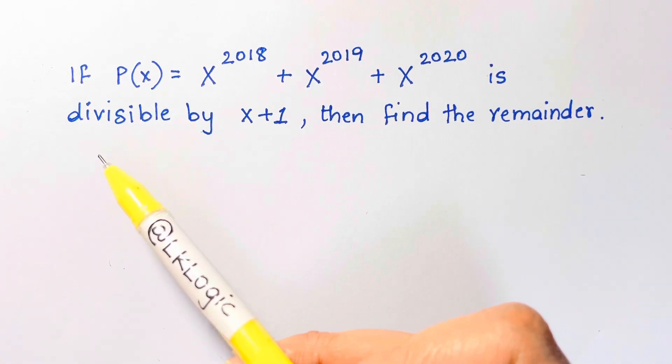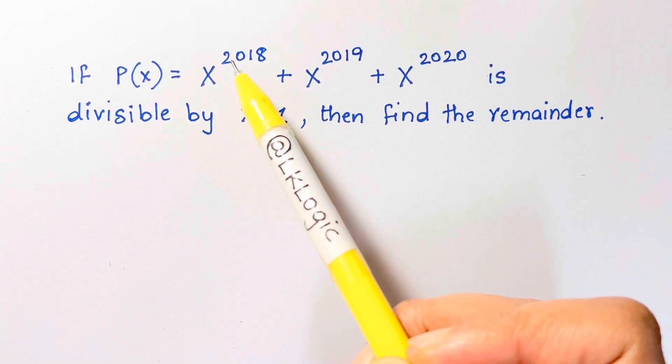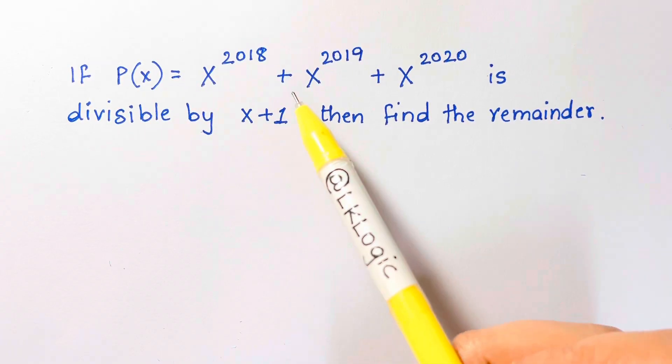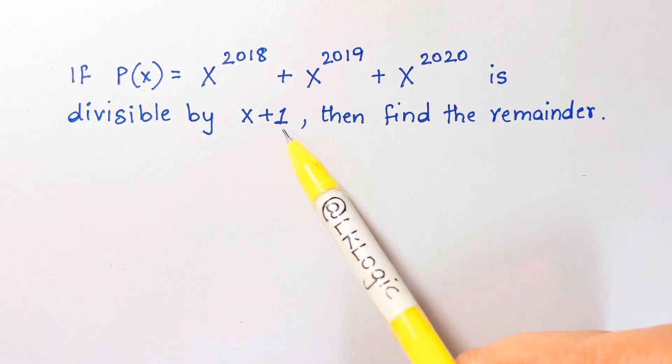Hi guys, a lovely problem for you all. If P(x) equals x to the 2018 plus x to the 2019 plus x to the 2020 is divisible by x plus 1, then find the remainder.